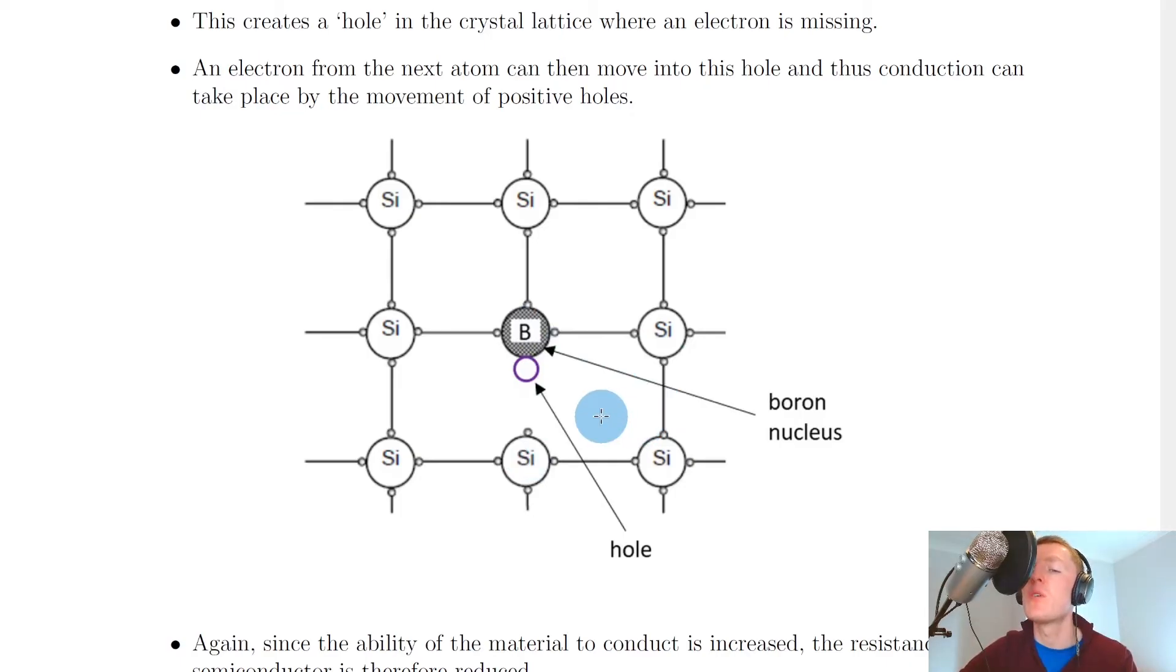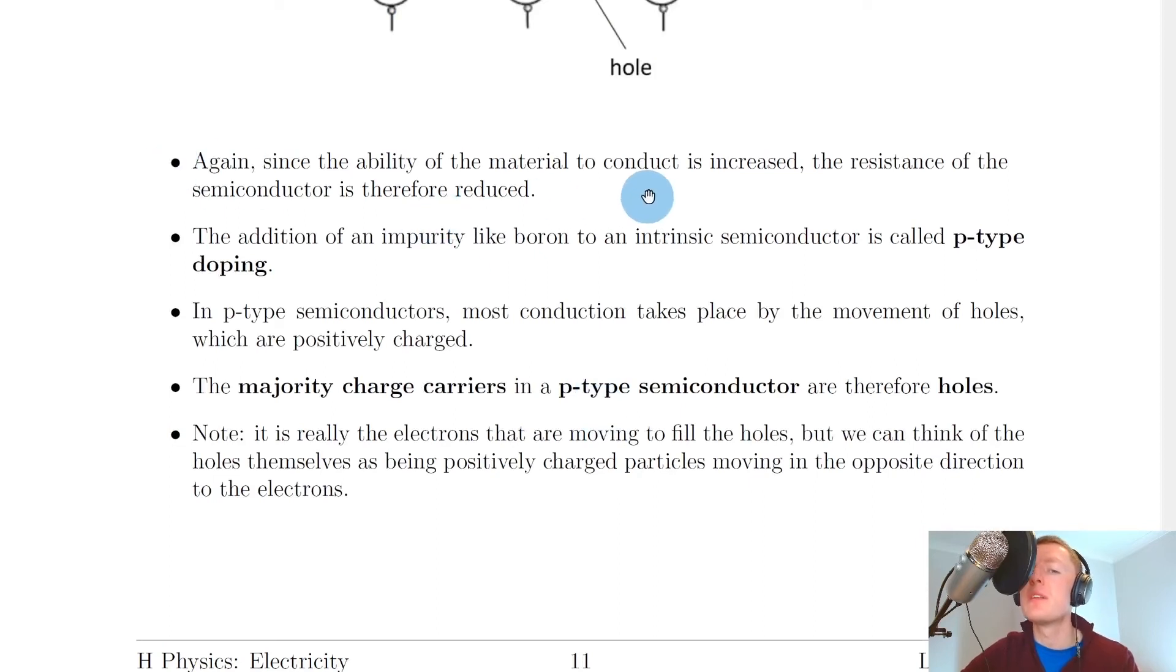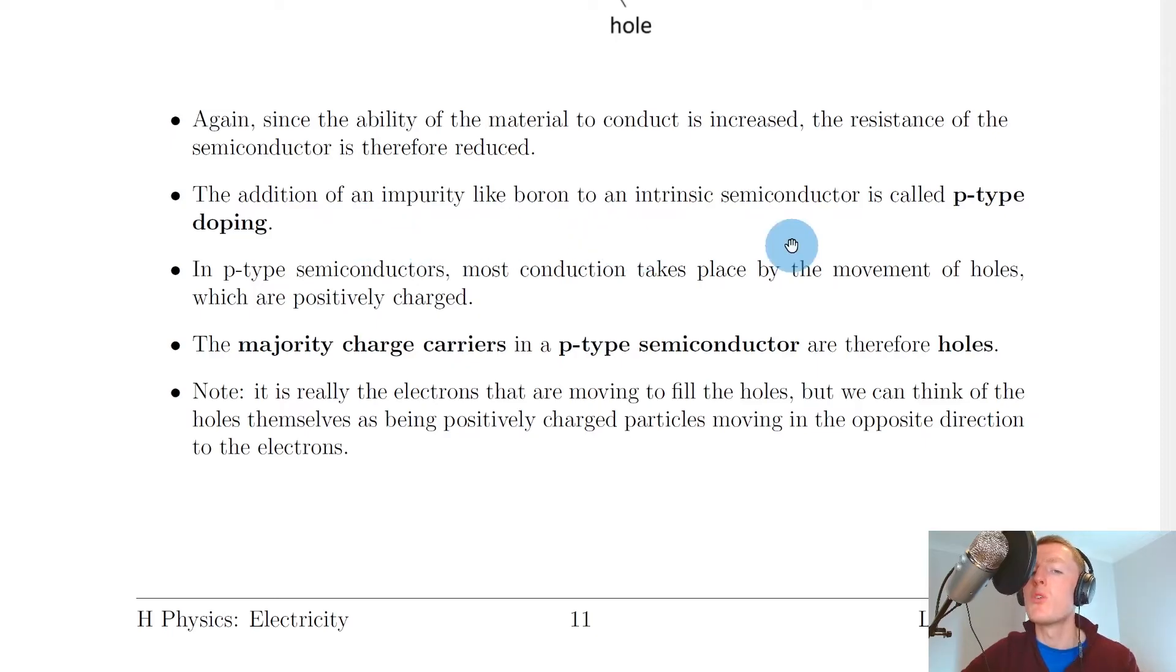Since the ability of the material to conduct is increased this time through the movement of positively charged holes, the resistance of the semiconductor is therefore reduced. We've got increased conductivity and therefore the resistance of the material decreases. The addition of an impurity like boron to an intrinsic semiconductor is called p-type doping. In p-type semiconductors, most conduction takes place by the movement of holes, which are positively charged.